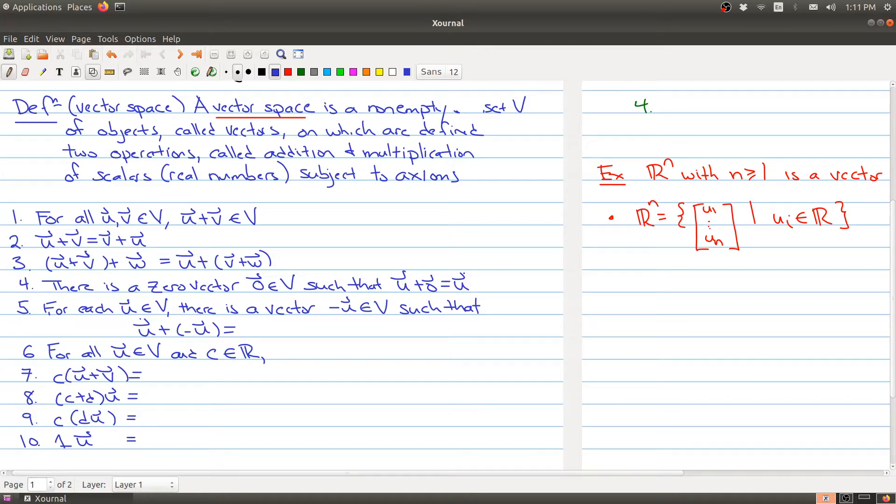The vector space also has the property that whenever you're given a vector, there's another vector in your vector space called the negative of it, such that when you add those two vectors, you can get to the zero vector. Okay, so statements two through five are telling us a little bit about how the addition operation works in your vector space.